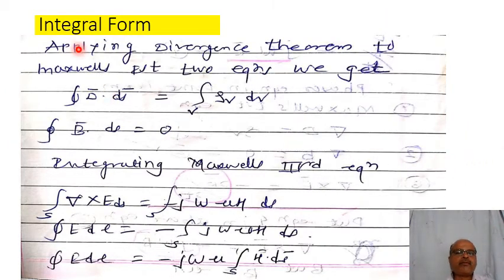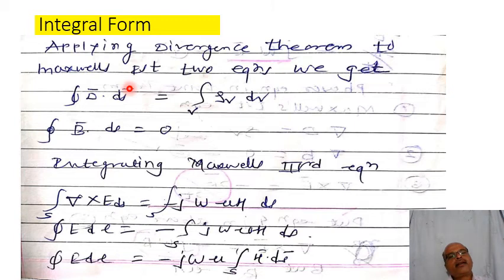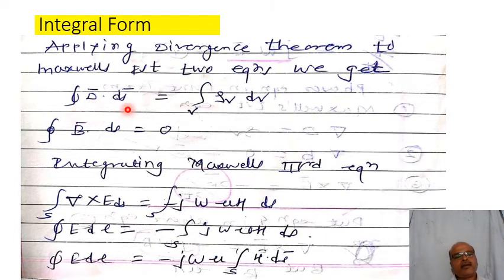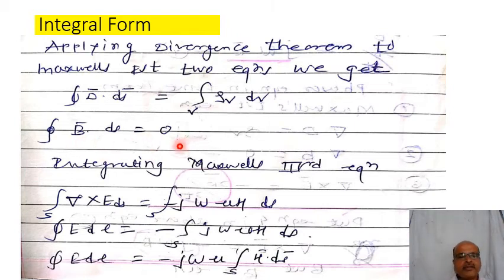Next, we derive the integral form of these phasor equations. As with Maxwell's equations for steady electric and magnetic fields, we convert to integral form by applying the divergence theorem to the first two equations and Stokes' theorem to the next two. Applying the divergence theorem to the first equation — del-dot D equals rho-v — gives the closed surface integral of D-bar dot dS-bar equals the volume integral of rho-v dV. For the second equation, the closed surface integral of B-bar dot dS-bar equals zero.